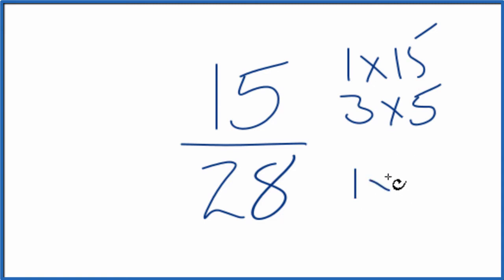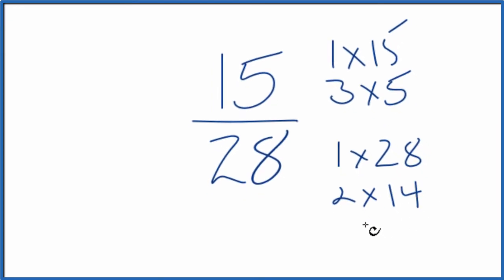For 28, we could have 1 times 28, 2 times 14, 4 times 7, and that's about it for that.